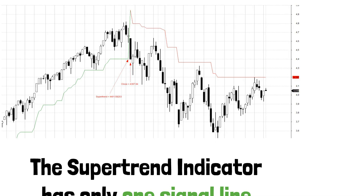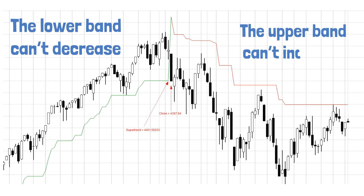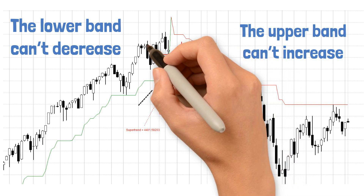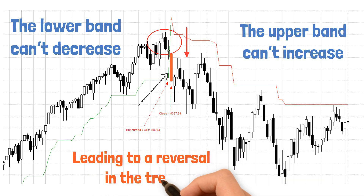This is because the lower band can't decrease and the upper band can't increase. Thus, the Supertrend Indicator takes on the values of both the lower and upper bands alternatively. When the close of a bar crosses the value of the Supertrend Indicator from the previous period, the indicator begins to follow the opposite band, leading to a reversal in the trend.